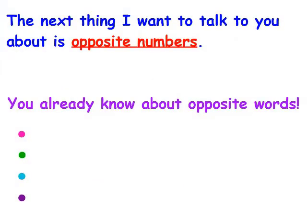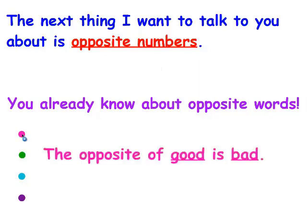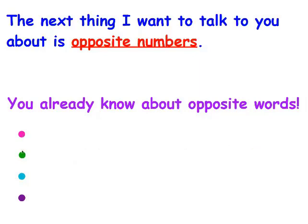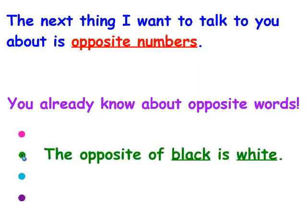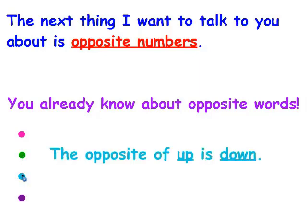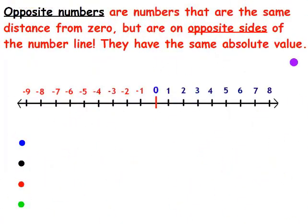The next thing I want to talk to you about is opposite numbers. Now you already know about opposite words: the opposite of good is bad, the opposite of black is white, the opposite of up is down, and the opposite of rich is poor. Opposite numbers are numbers that are the same distance from zero, but they're on opposite sides of the number line. They have the same absolute value.